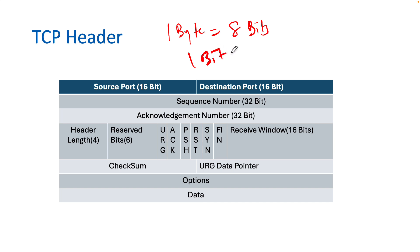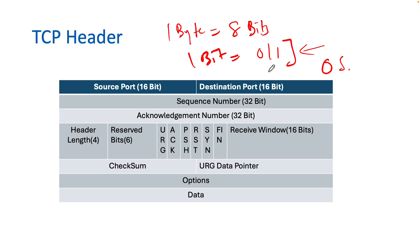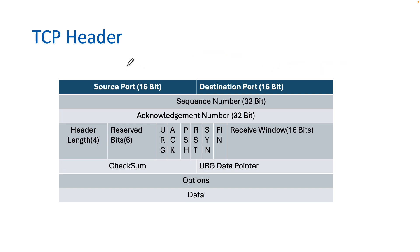One byte equals 8 bits, and one bit is either zero or one. Computers understand zero and one; we understand English, Hindi, or whatever language we speak. The operating system converts our language to machine language, which is binary. Now let's calculate the size used by the TCP header by looking at its fields.